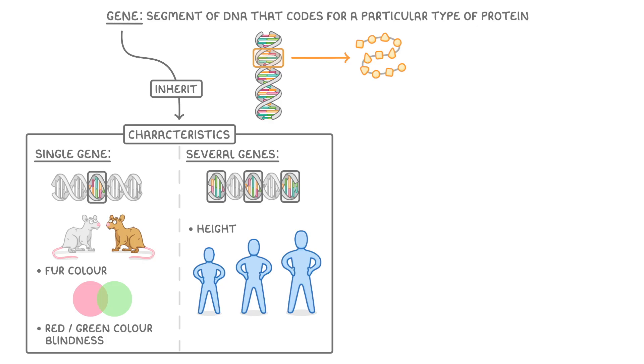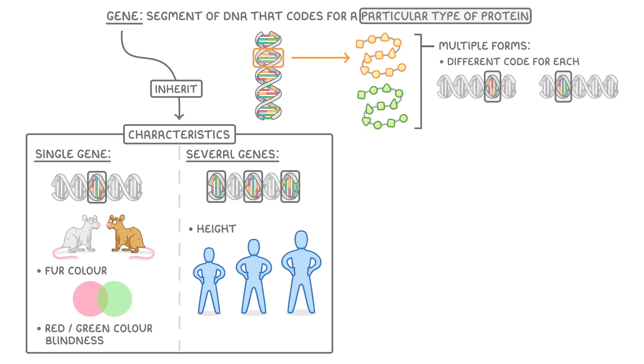If we look back at the definition of a gene, you'll notice that it codes for a particular type of protein. The reason I say type of protein is that there are often multiple forms of the same protein, and so there'll be a different genetic code for each of those forms. And we call these different codes alleles. So you can think of alleles as different versions of the same gene.